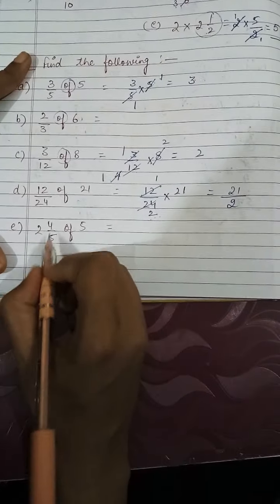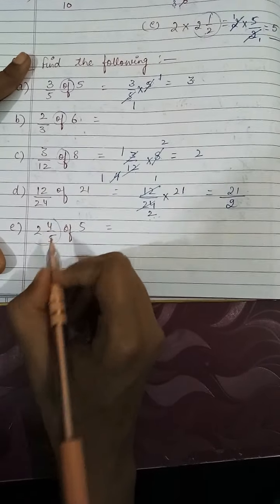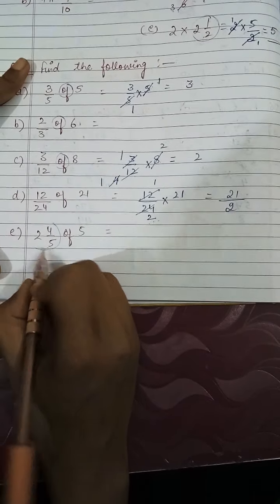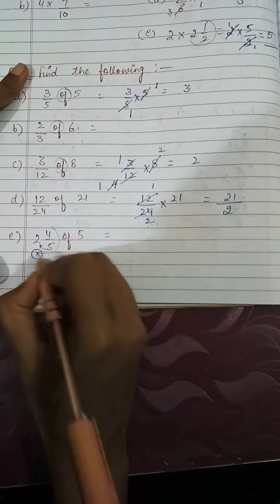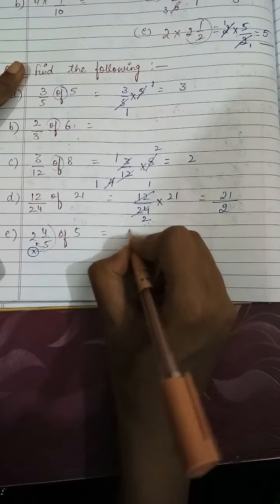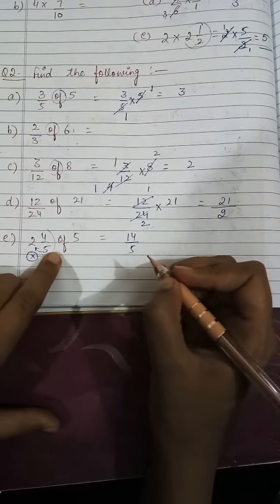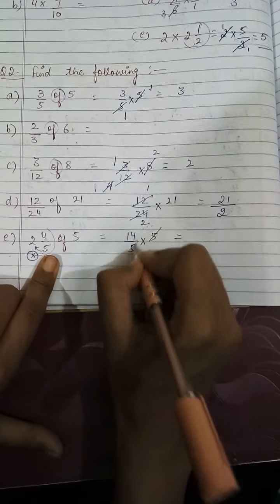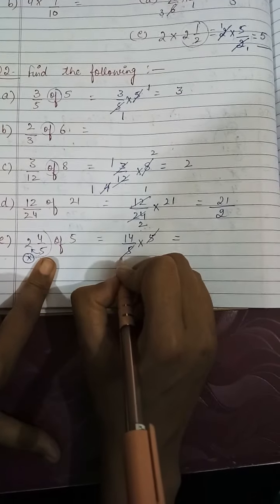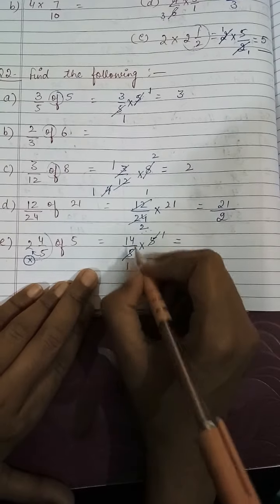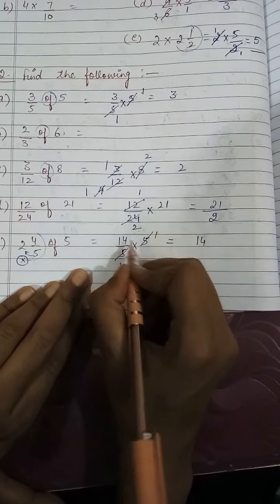Now part E — this is in mixed fraction, so we will convert it into improper fraction. We multiply: 5 × 2 = 10, plus 4 gives 14 upon 5. 'Of' is there, meaning multiply by 5. The 5 and 5 are getting cancelled on the table of 5, so the answer will be only 14, because 14 × 1 = 14.